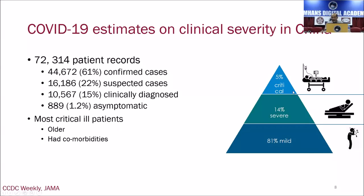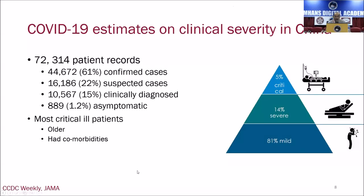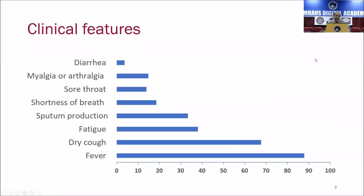It is 5% who are critically ill who need ICU care and ventilatory support. These 5% who develop critical illness also have other comorbidities. First of all, they are elderly people above the age of 60. And if they have other medical conditions such as diabetes, hypertension, cardiovascular disease, other chronic respiratory illnesses, or cancers, they are the people likely to go into severe infection.